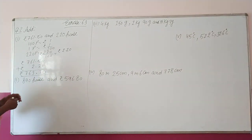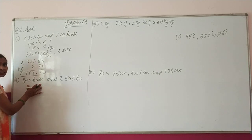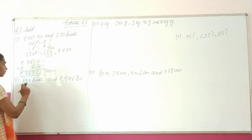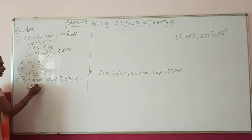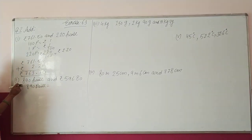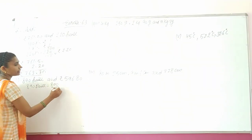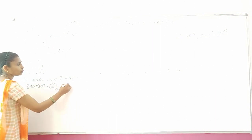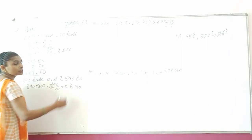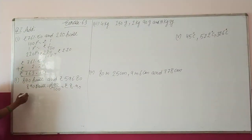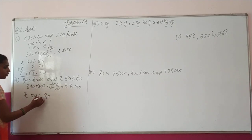Now in the next sub-part, one number is given in paise and the other is given in rupees and paise with a decimal. So 890 paise — if we divide by 100 it converts to rupees: Rupees 8.90. Now we have to do addition of Rupees 596.80 and Rupees 8.90.